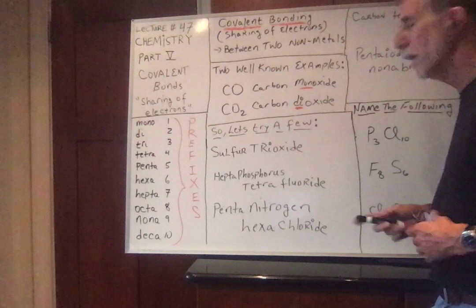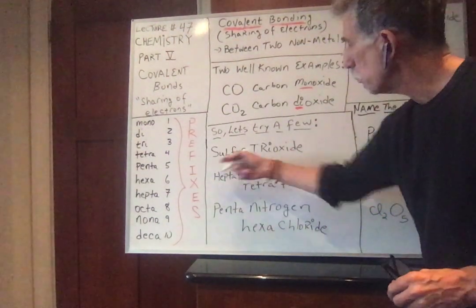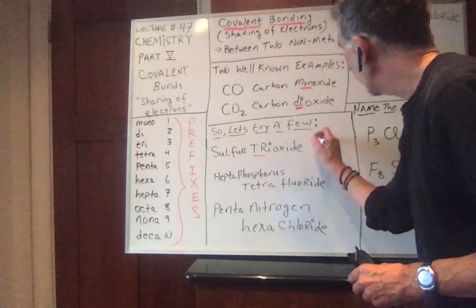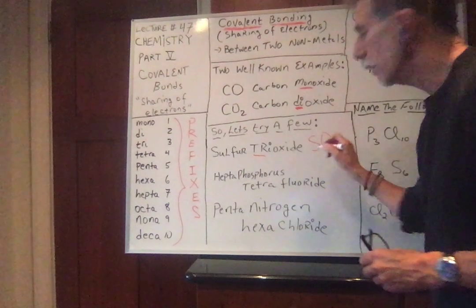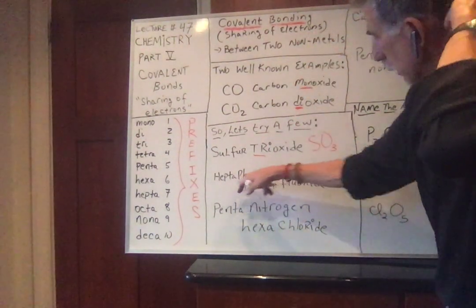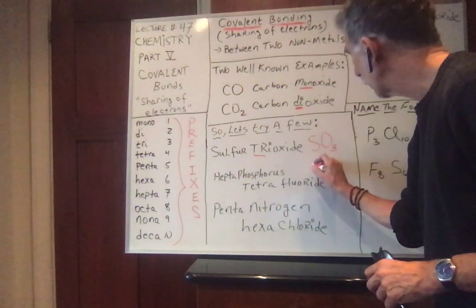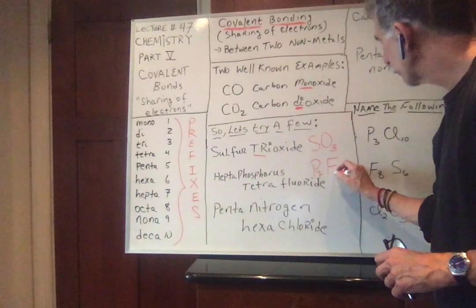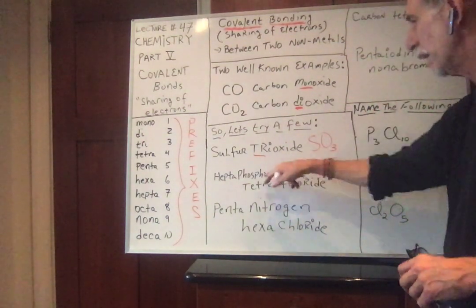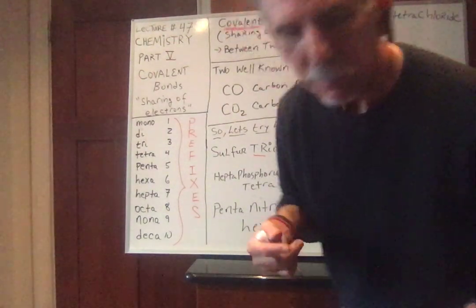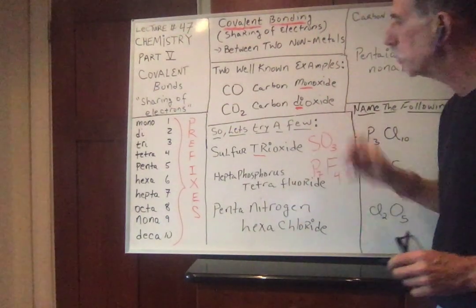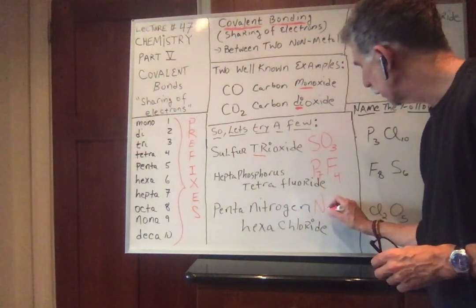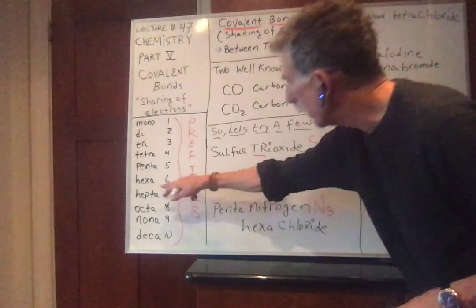Let's do a few examples. Sulfur trioxide — tri means three, so we have SO3. Heptaphosphorus: hepta is seven, so P7. Tetrafluoride: tetra is four, so F4. I know sulfur trioxide exists; I don't know if heptaphosphorus tetrafluoride exists, but we're just doing examples. Pentanitrogen: penta is five, N5. Hexachloride: hexa is six, Cl6. So easy — don't get these wrong, they're very simple.